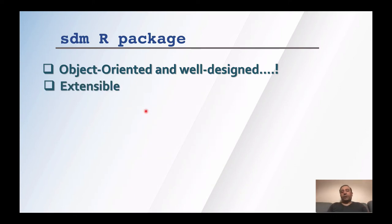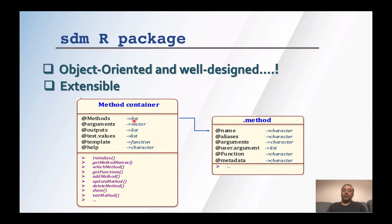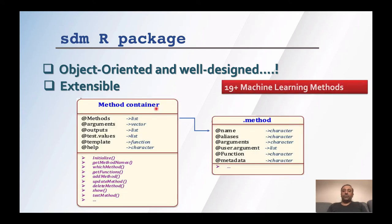SDM is also extensible through container classes that keep different methods inside. The advantage is that new methods can be easily added, not only by developers but also by users. The current version supports 19 machine learning approaches, but new approaches can be added by users. It also supports ensemble forecasting.